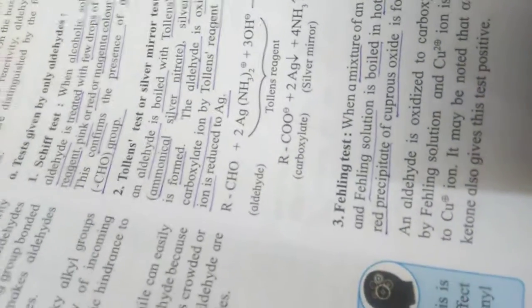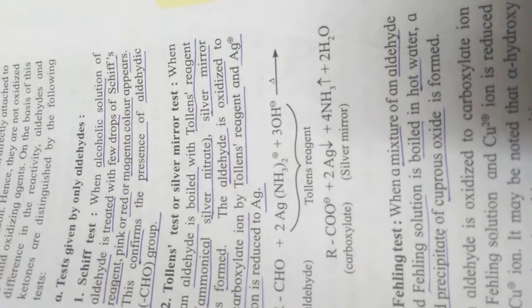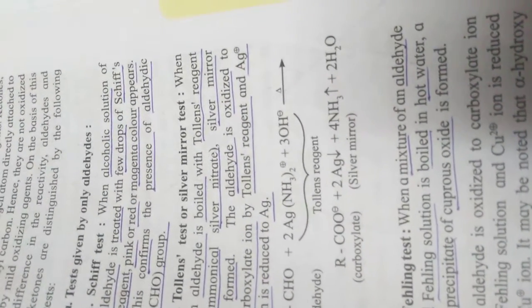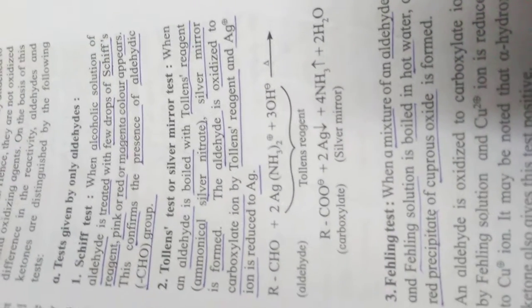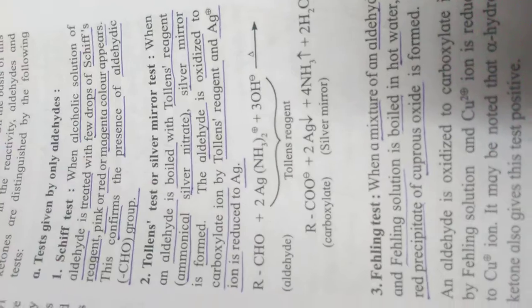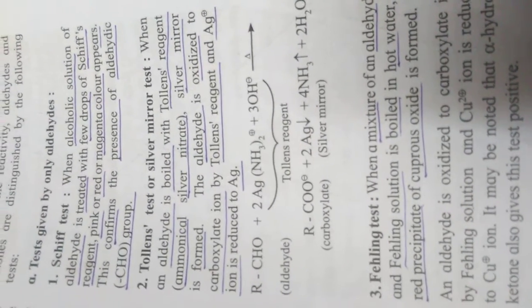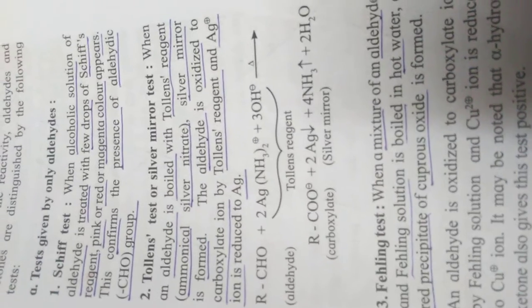In Tollens test, when aldehyde and Tollens reagent are boiled, a silver mirror forms. The aldehyde is oxidized to carboxylate ion by Tollens reagent, and Ag+ ion is reduced to Ag.